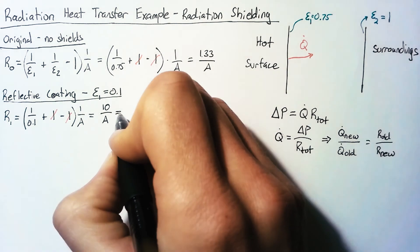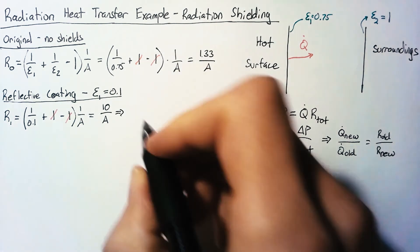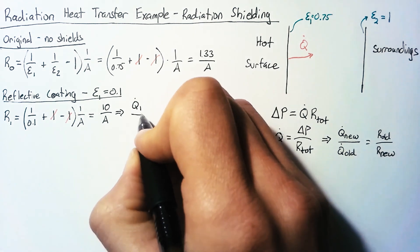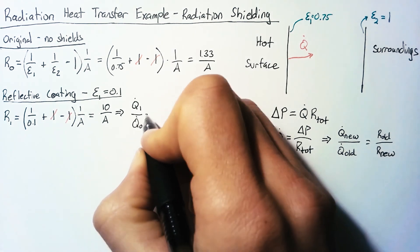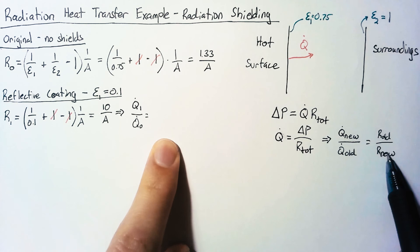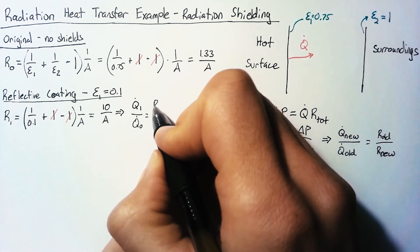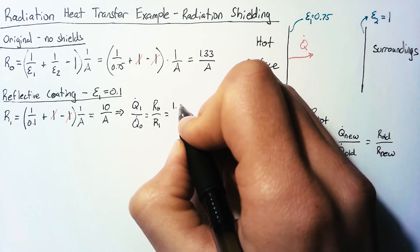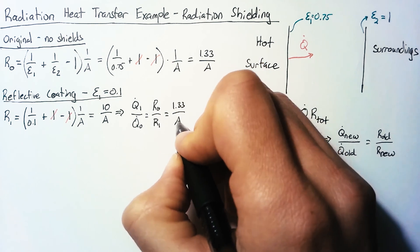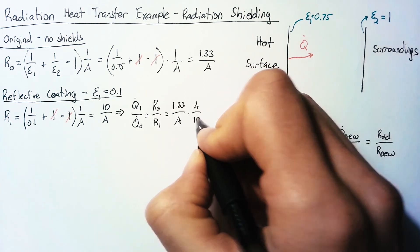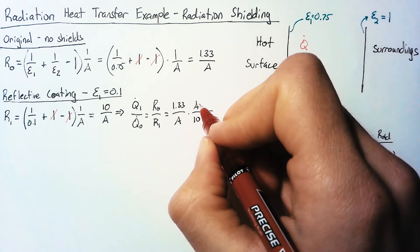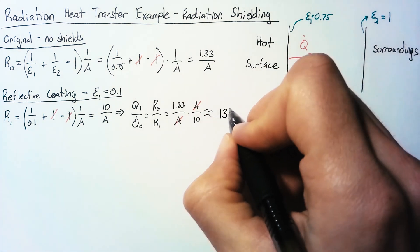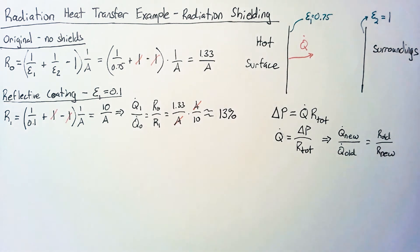We're interested in the q-dots, so let's compute q-dot 1 divided by q-dot 0. That equals R0 divided by R1, which is (1.33/A) × (A/10). Canceling the areas, the result is right around 13% of our original heat flow.